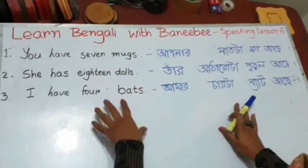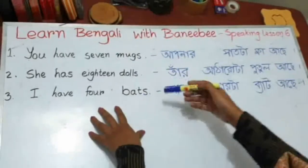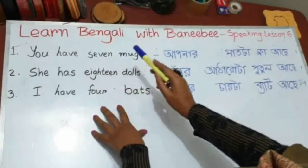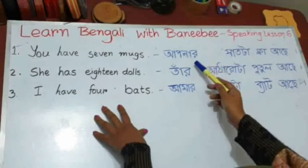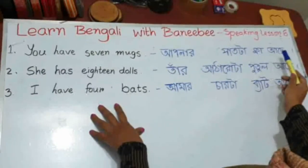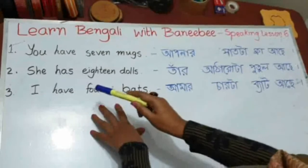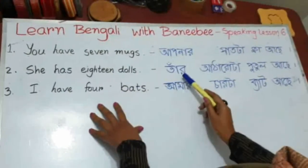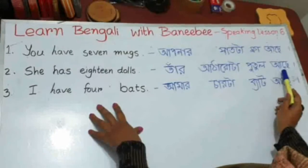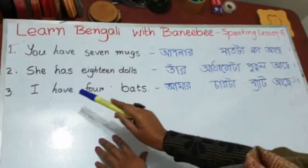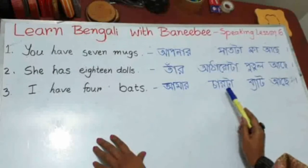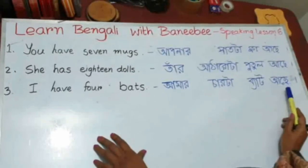Here are the answers. I wanted you to translate these sentences into Bangla. You have 7 marks. Means, aapnar shakta mob achhe. She has 18 dogs — tar aatharota putul achhe. I have 4 packs — aamar chakta bat achhe.